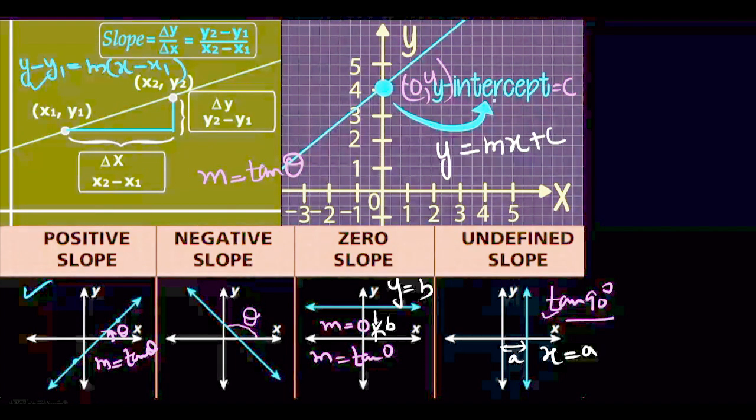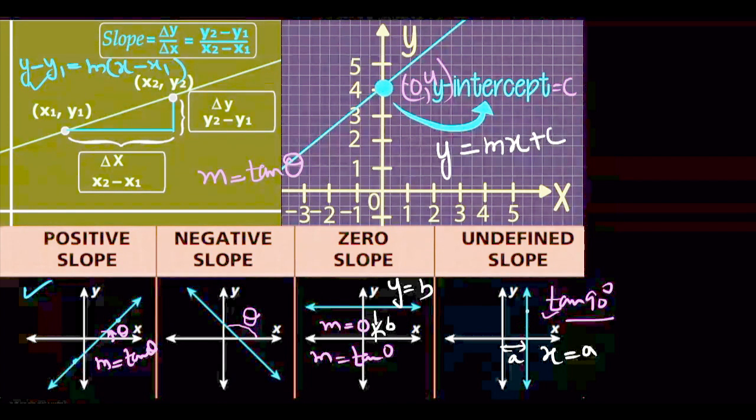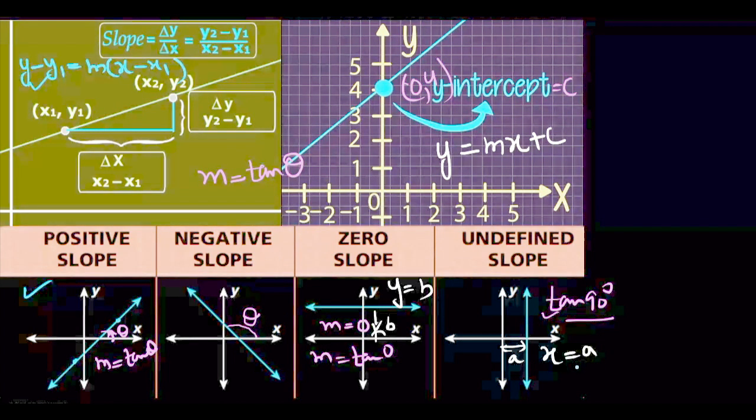In case of y-intercept, the equation of straight line is y equal to mx plus c. When a point and slope is given, then y minus y1 equal to m(x minus x1), where m is slope. When a line is parallel to x-axis, equation is y equal to constant, and parallel to y-axis is x equal to a.